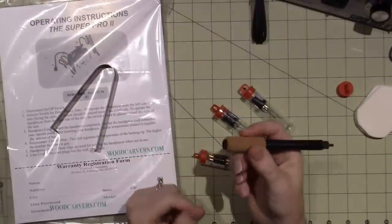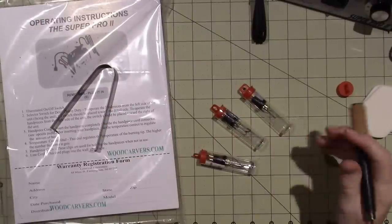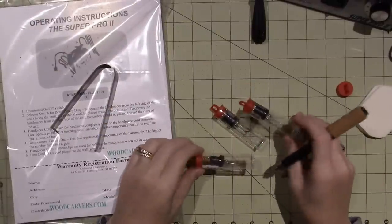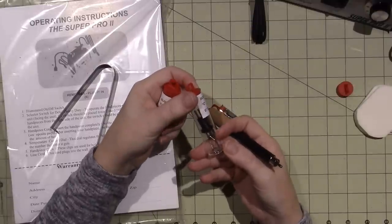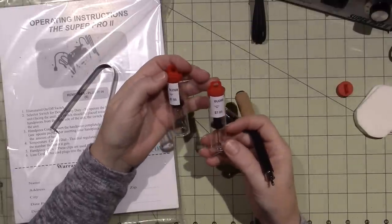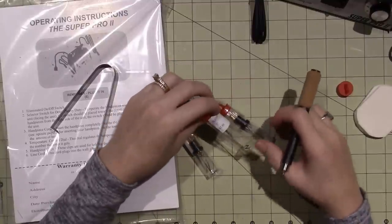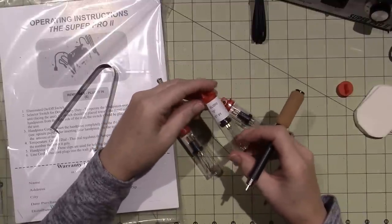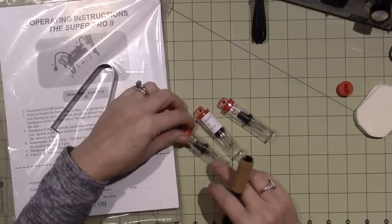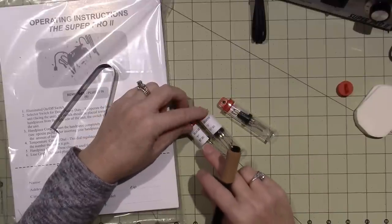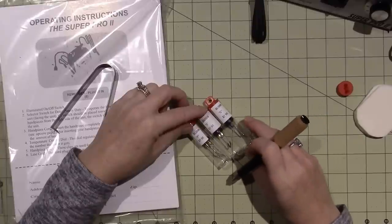And I guess this cork is so that you don't get burned. Let me see - this is the C, which I think is a writing tip. This is the skew, F, and this is the shader, S. These tips go for eight bucks a piece, $7.95 each.